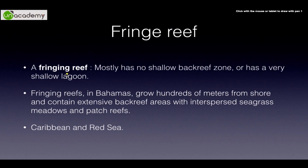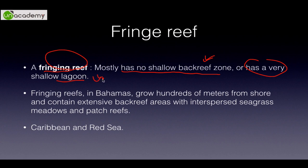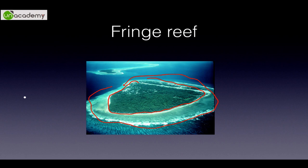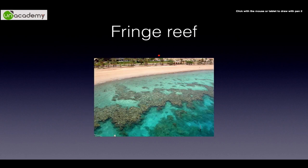A fringing reef has mostly no shallow back-reef zone or a very shallow lagoon. Fringing reefs are especially common in the Bahamas; they can grow to a huge extent and contain back-reef areas characterized by seagrass meadows and patch reefs. They are found in the Caribbean and Red Sea. You can see in this example that the island is surrounded by the reef region with no lagoon formation.